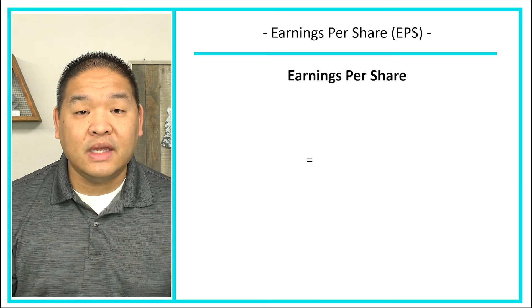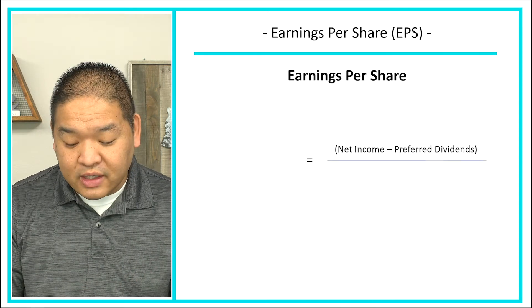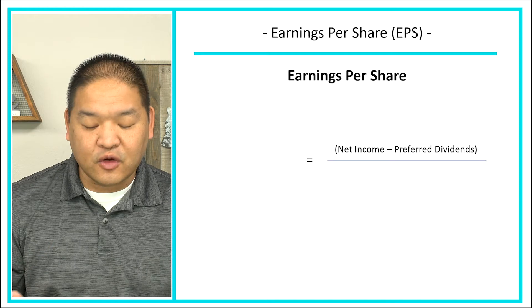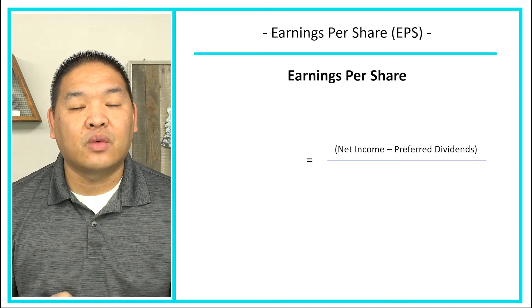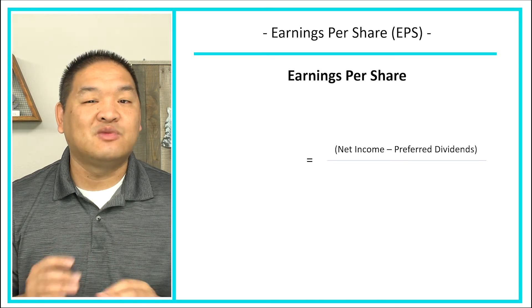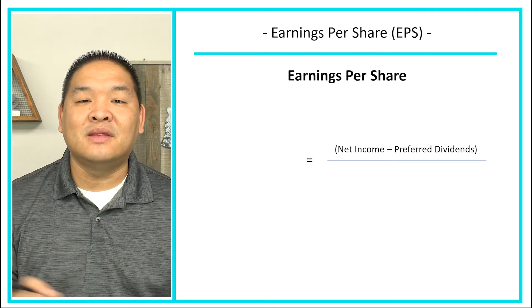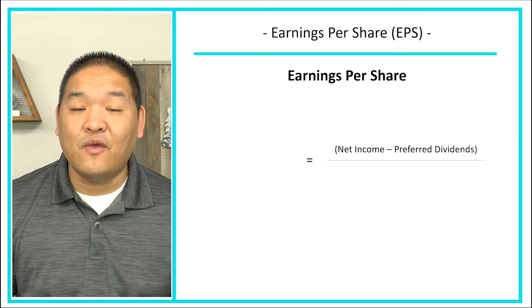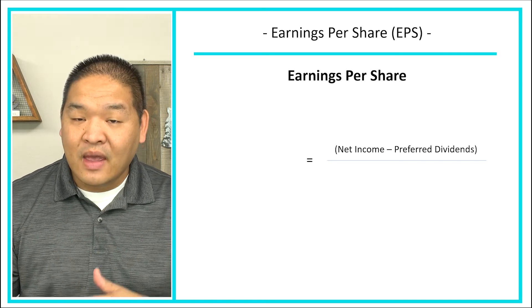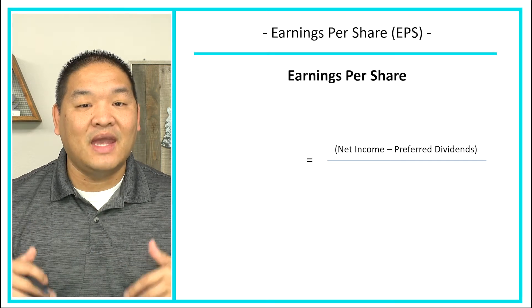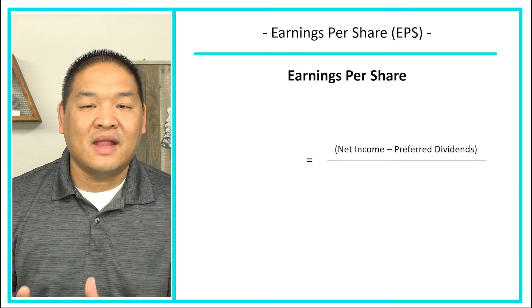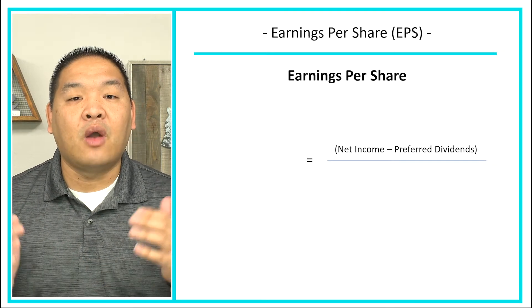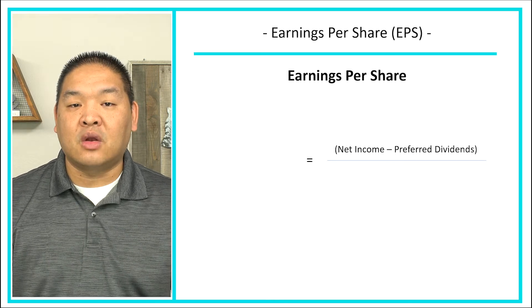The way we calculate EPS is pretty simple. We're going to take net income and subtract preferred dividends. The reason we subtract preferred dividends is because we can't participate in those anyway — it's really not our money. Preferred shares almost act like debt, and because of that, they have to be paid first. So we take net income minus preferred dividends to get what is available to common shareholders.